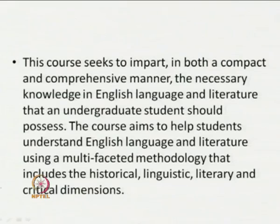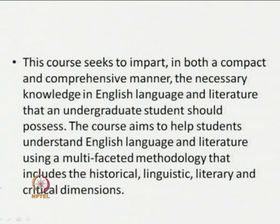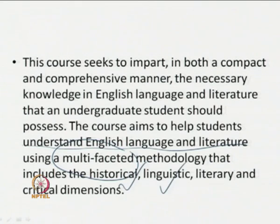Let us do a recap of the first lecture. We began by talking about the aims and the scope of our course. As declared in the course syllabus on the website, this course seeks to impart in both a compact and comprehensive manner the necessary knowledge in English language and literature that an undergraduate student should possess. The course aims to help students understand English language and literature using a multi-faceted methodology that includes the historical, the linguistic, literary and the critical dimensions.